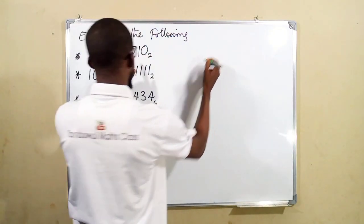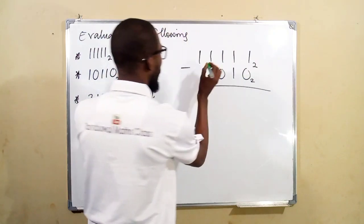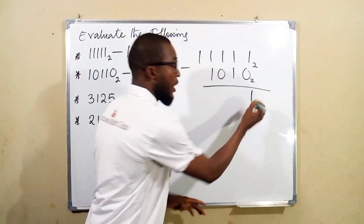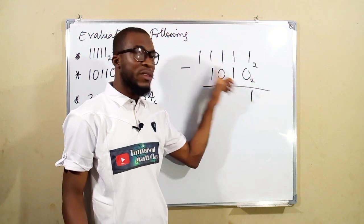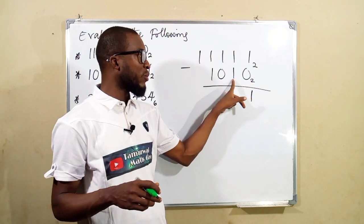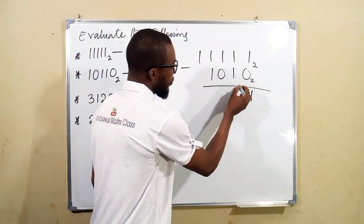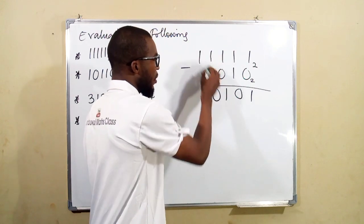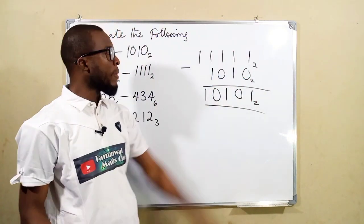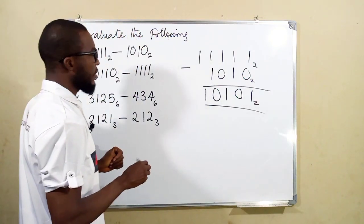The first problem: we are asked to subtract 1010 from 1111 in base 2. We start from the right. 1 minus 0 is 1. Remember, we can never have 2 in this set of numbers because the highest digit is one less than the base, and our base is 2, so the highest digit is 1. Then: 1 minus 1 is 0, 1 minus 0 is 1, 1 minus 1 is 0. So the result is 0101 in base 2. This time we have not borrowed anything.